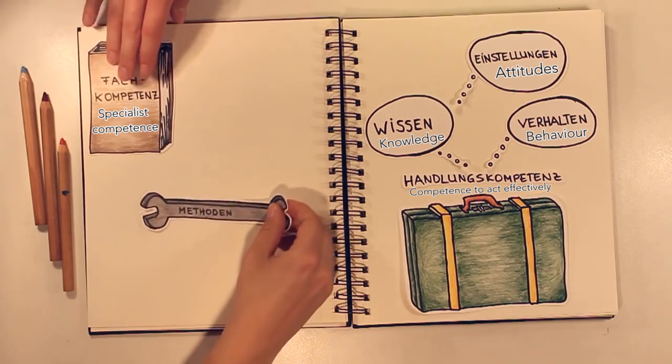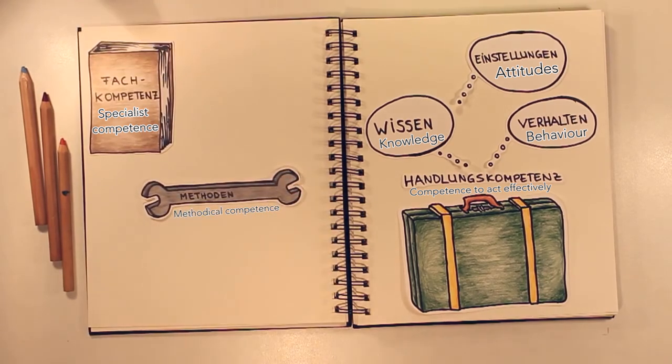A further aspect of acting effectively is methodical competence. While interacting, it is important to know methods that will serve as appropriate tools in each situation. However, it is not enough to know these methods. We must be capable of putting them into practice.